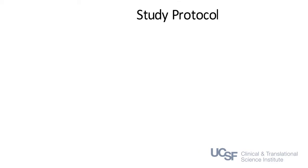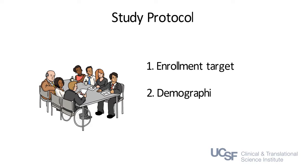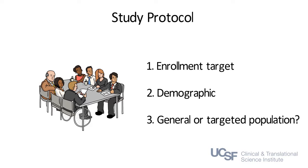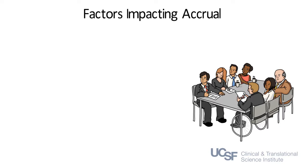First, you'll need to consider what's in your study protocol. This includes how many people you need to enroll, whether there are any demographic specifications, and whether the inclusion-exclusion criteria point to a general or targeted population. You should also assess any positive or negative factors that may impact accrual.